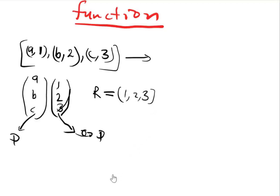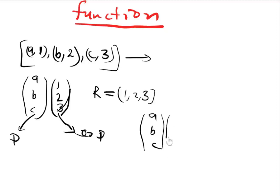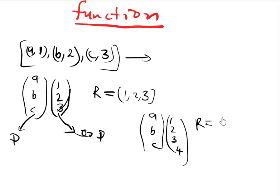But what if the domain and co-domain are not equal? For example, if the domain is {a, b, c} and the co-domain is {1, 2, 3, 4}, then if you are asked to find the range, the range will be equal to {1, 2, 3}.